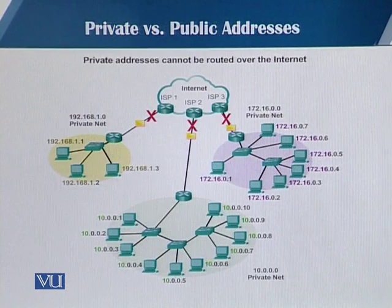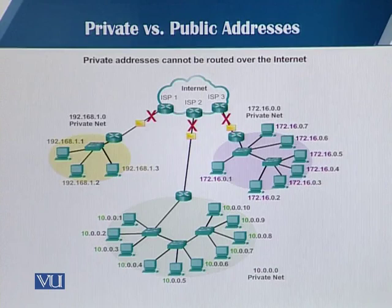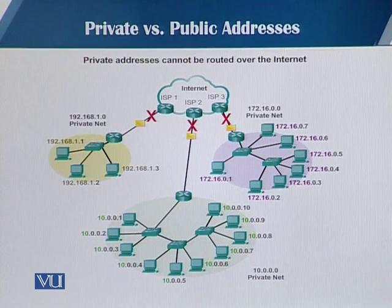The private IPv4 address cannot be routable on the internet, which means that this private IP address cannot be reached over the internet. As you can see from the slide, these are multiple networks — three networks — and all of them are connected to their particular ISPs and they have private IP addresses assigned to hosts.